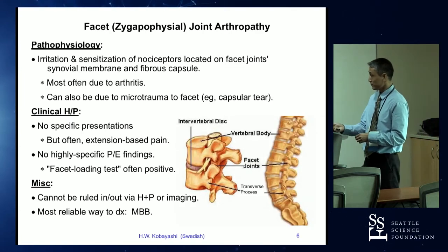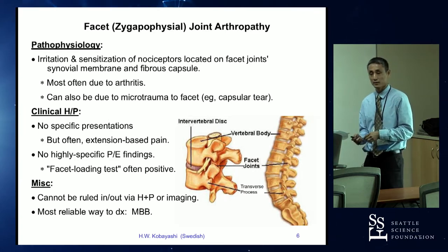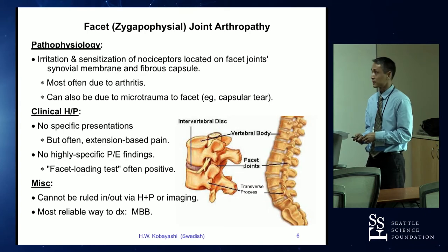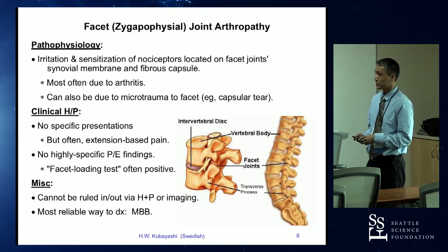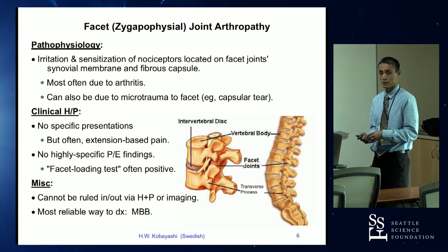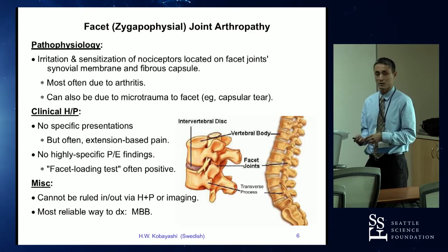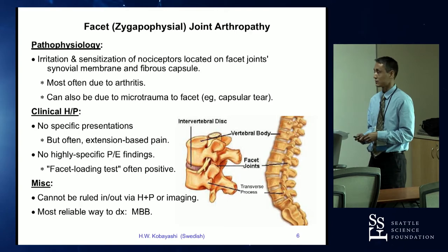Facet joint arthropathy is caused by the irritation and sensitization of nociceptors located on the facet joints — on the synovial membrane as well as in the joint capsule. Most often it is due to arthritic joint changes, but it can also be due to motor vehicle accident causing capsular tear or microtrauma to the capsule. In my experience, lumbar RFA tends to be more effective and higher yield in patients with MRI-documented evidence of facet arthrosis rather than somebody with clean-looking facet joints after a motor vehicle accident.